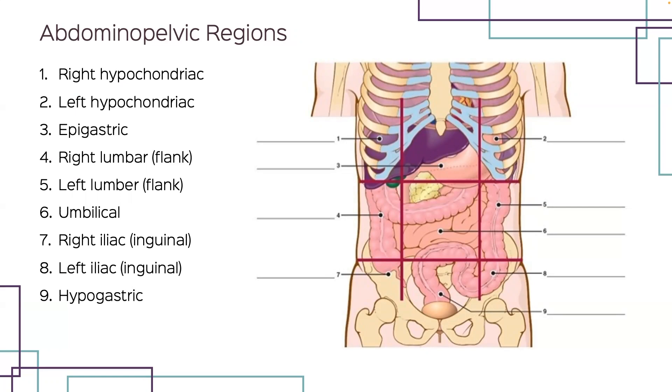Number four is your right lumbar, also called the right flank. Number five is the left lumbar or left flank. Dead center is your umbilical region. Number seven is your right inguinal, also known as your right iliac. Number eight is your left iliac or left inguinal. And number nine, bottom center, is your hypogastric.